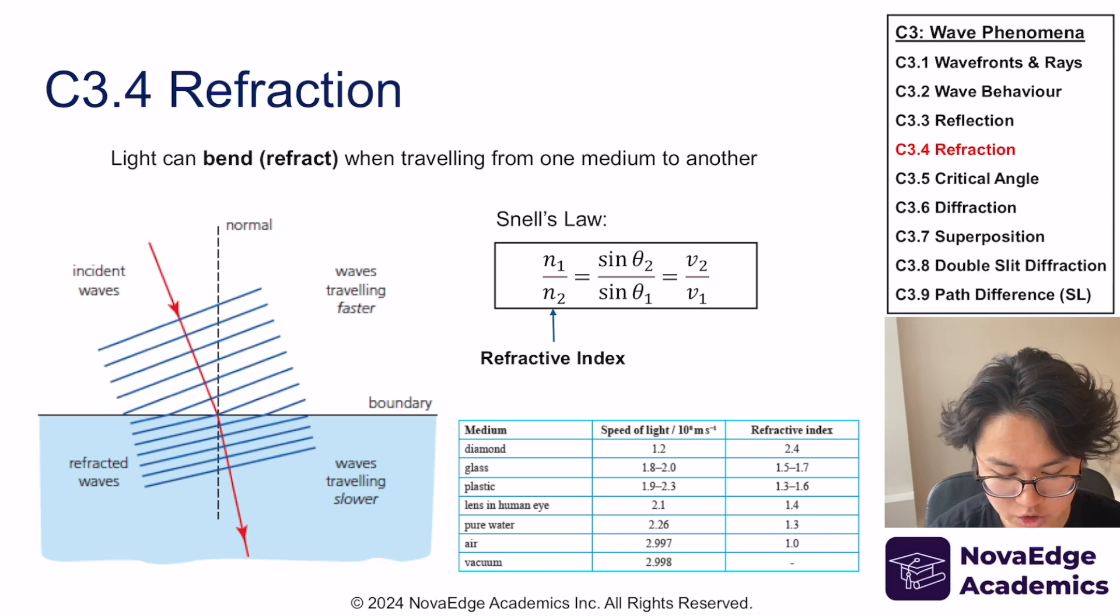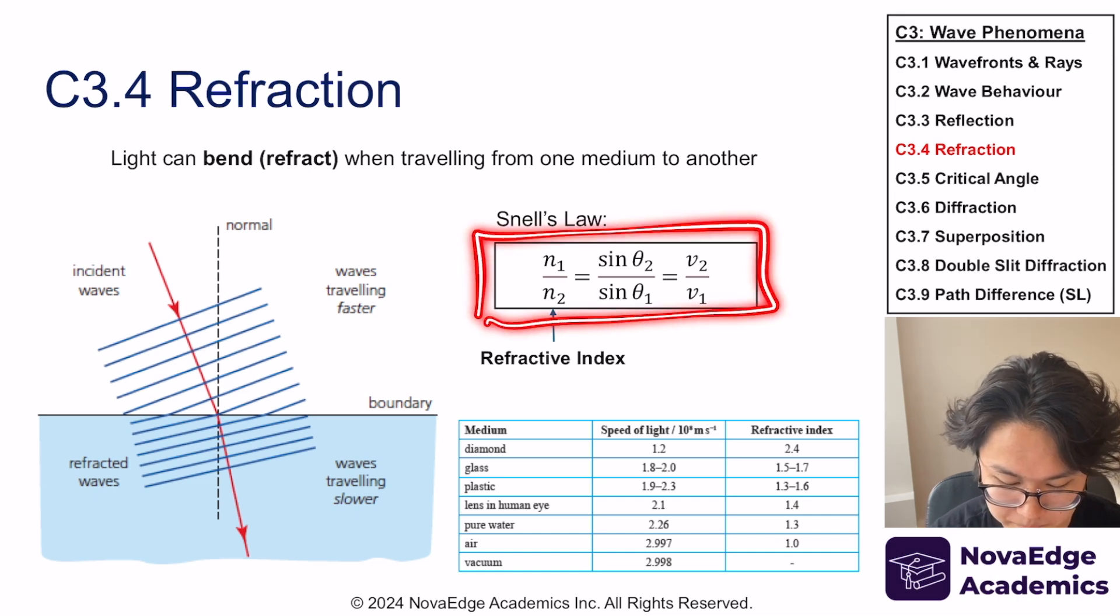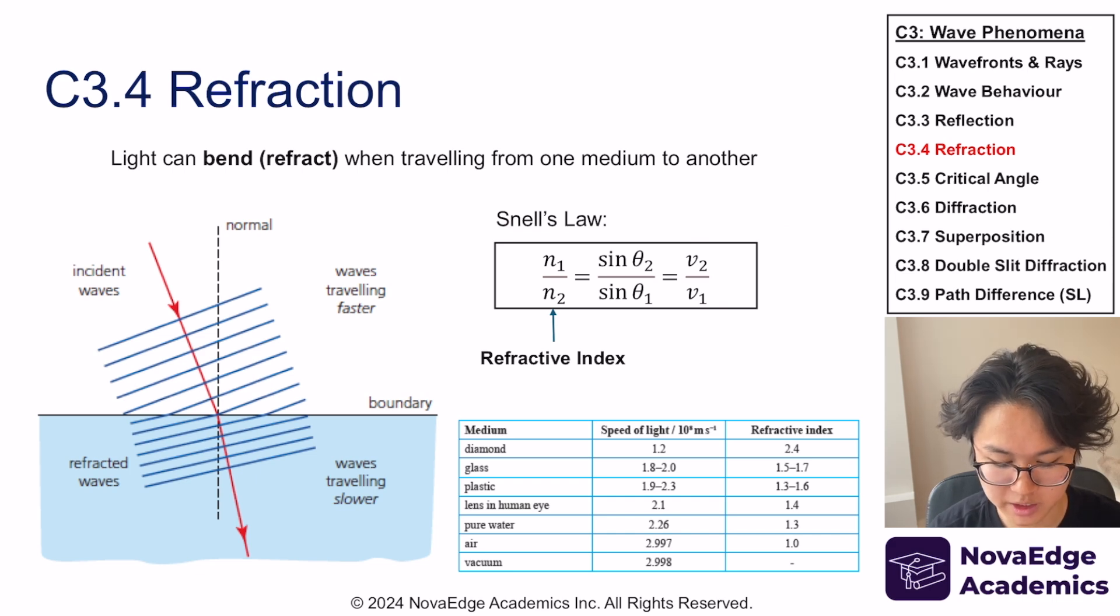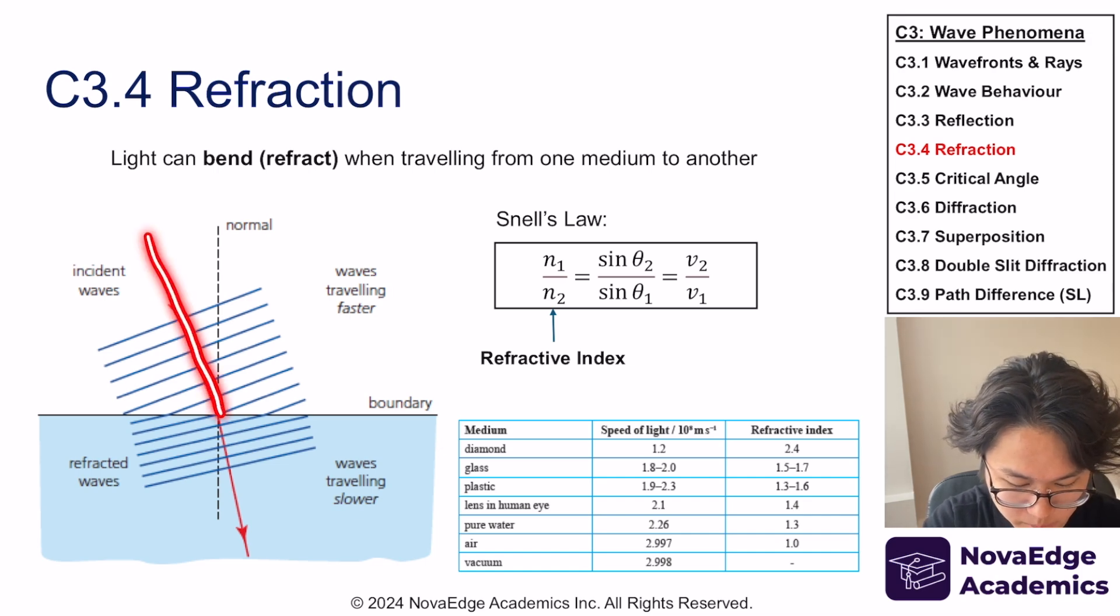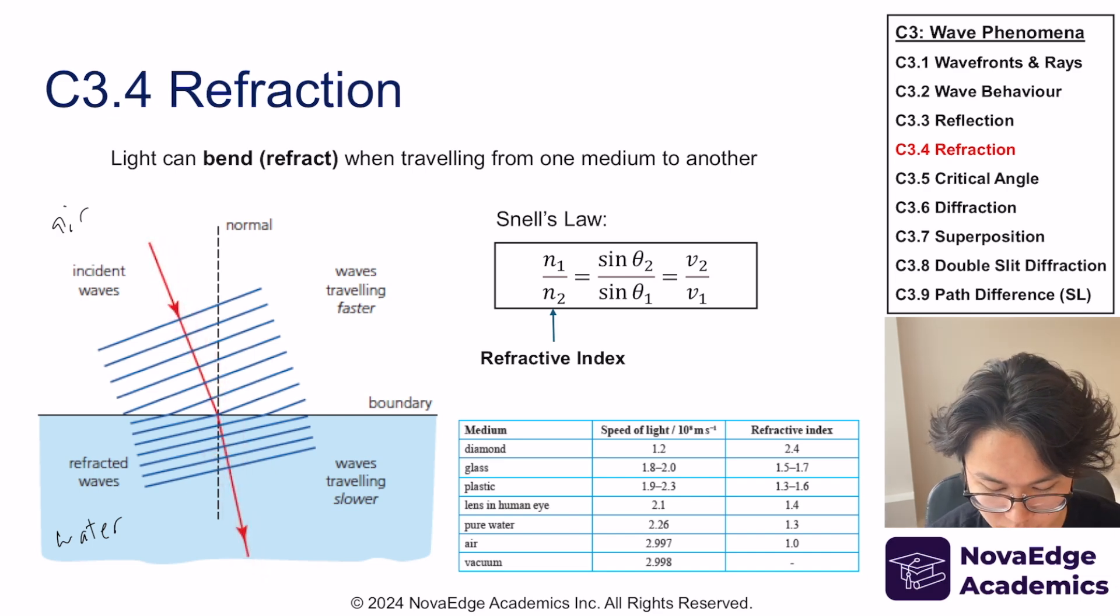But you might be asking, how do we know how much it bends? How can we predict how much it bends? Great question. We have a mathematical equation model for that. It's called Snell's law. And the entire purpose of Snell's law is it predicts the outcome or how much it bends. As an example, if I have light going from air into water, then I want to know how much it bends, and that's what Snell's law is for. n here is called the refractive index. It is the benchmark, the material property quantity that we give for each material.